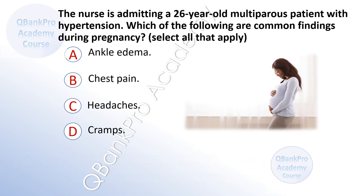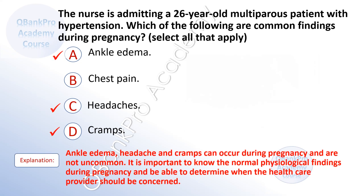The nurse is admitting a 26-year-old multiparous patient with hypertension. Which of the following are common findings during pregnancy? A. Ankle edema. B. Chest pain. C. Headaches. D. Cramps. Ankle edema, headache, and cramps can occur during pregnancy and are not uncommon. It is important to know the normal physiologic findings during pregnancy and be able to determine when the healthcare provider should be concerned.